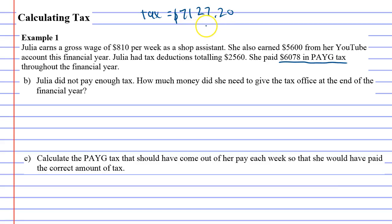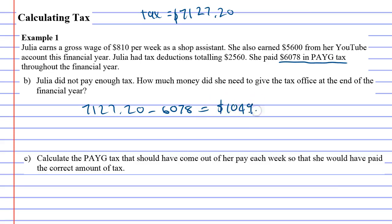The question asks how much money did she need to give the tax office at the end of the financial year. Because she's already paid most of it — the $6,078 — to figure out what's left over we just subtract it. We take the $6,078 away from what she should have paid: $7,127.20 minus $6,078, which equals $1,049.20.